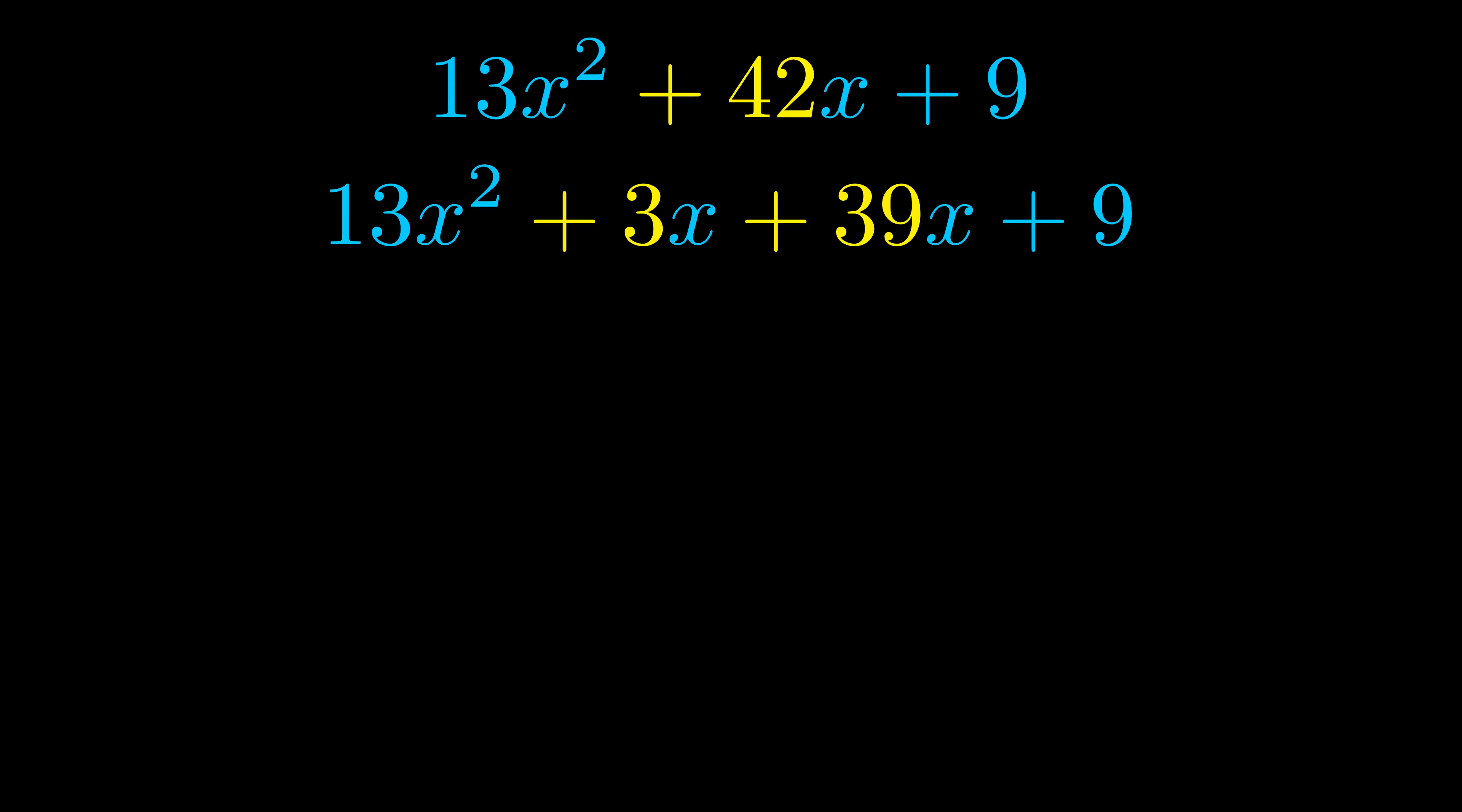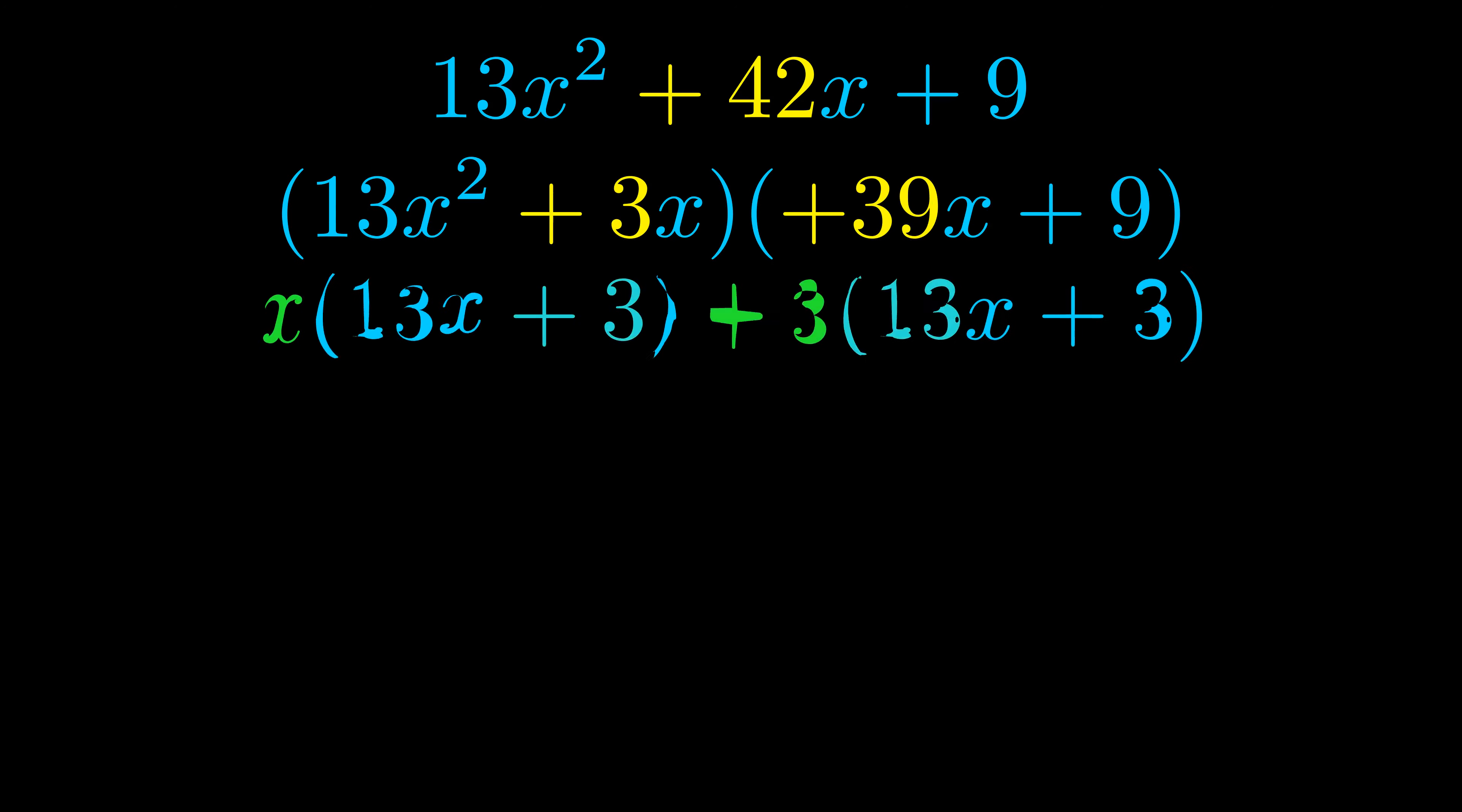Once we've done this we go ahead and we put parentheses around the first term and the last term. And we do that so that we can take the greatest common factor out of both terms. We can see the greatest common factor is now outside in green. Notice also how what remains inside of the parentheses is the same in both cases. The blue values are the same.